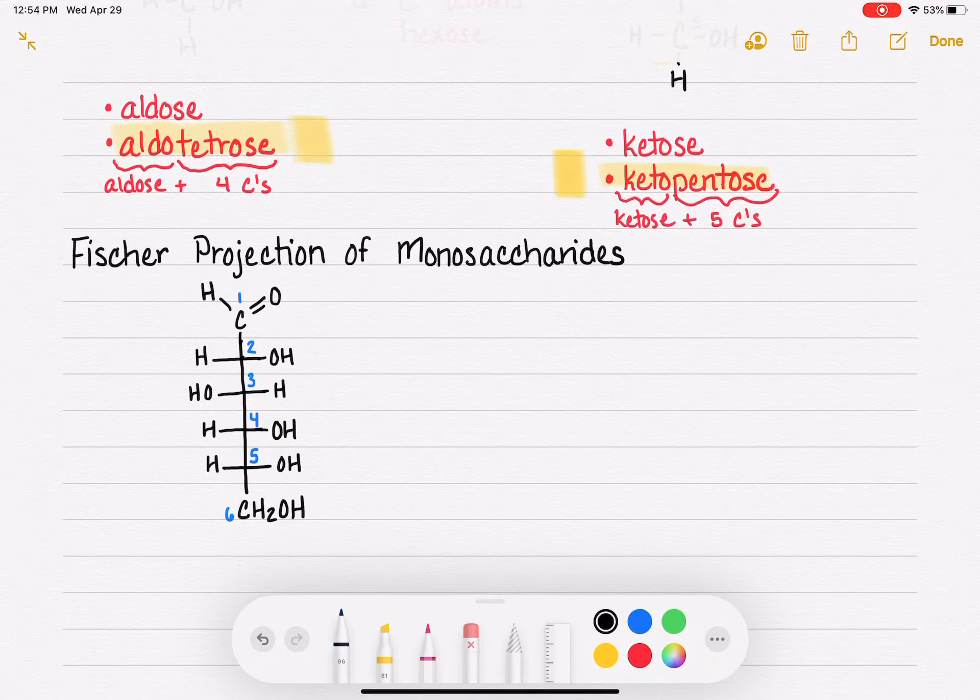So for a monosaccharide, if you are ignoring the top carbon, which is this guy right here, and ignoring the bottom carbon, which is this guy right here, focusing instead on all the carbons in the middle. So for this one, it's two, three, four, five, carbons two, three, four, five.